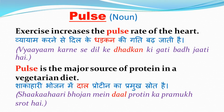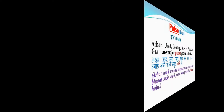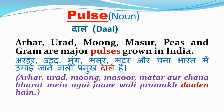Pulse also means दाल, an edible seed. Pulse is the major source of protein in a vegetarian diet. शाकाहारी भोजन में दाल प्रोटीन का प्रमुख स्रोत है. अर्हर, उरद, मुंग, मसूर, पीज, एन ग्राम are major pulses grown in India.